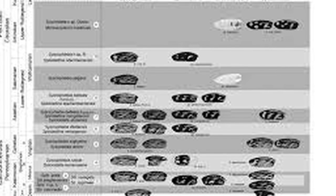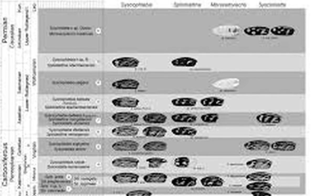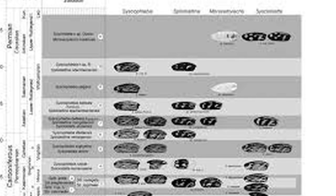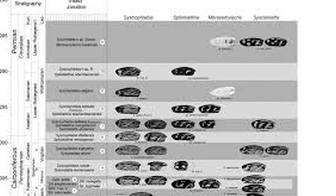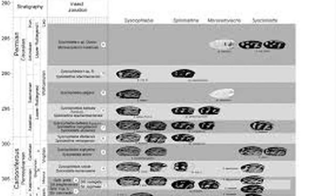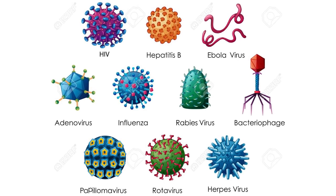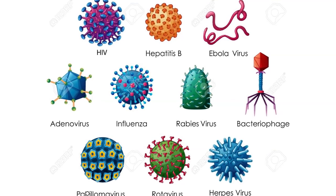A chronospecies, also useful in paleontology, is a single lineage whose morphology has changed over time. At some point, descendants of a single population will have accumulated enough morphological changes that they are recognized as a new species. The weakness here is that it can only be applied where a series of a lineage is represented in the fossil record.